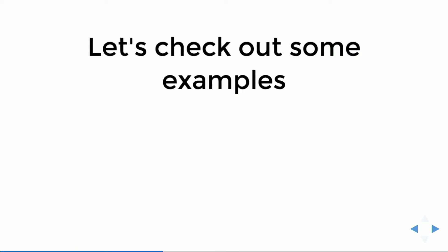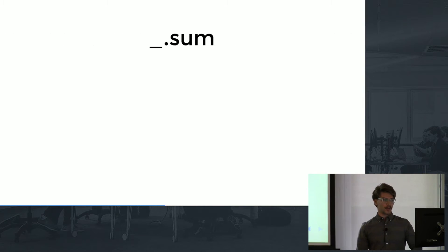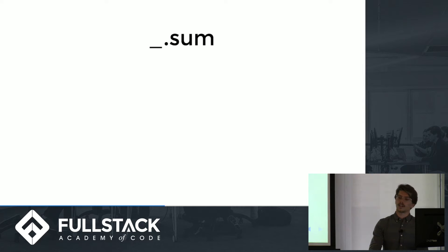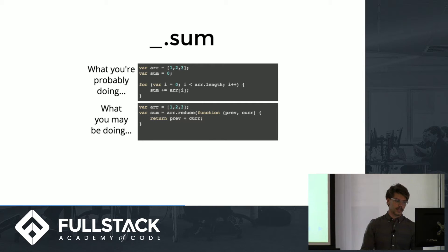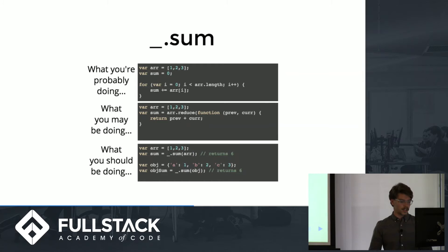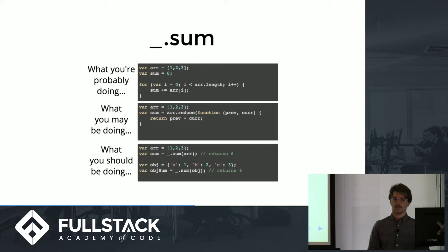Now I'm going to walk through some pretty simple examples and slowly ramp up to more difficult stuff. If anyone's used a language like Python, you can have an array and literally just write .sum and it returns the sum. In JavaScript you generally have to write more code — you might have an array, an incrementer, and sum it up. If you're more advanced, you might use the reduce function. But what you should be using with Lodash is just passing in the array and it returns the value. You can even use it on an object, which is really nice, whereas otherwise you'd have to iterate over every key using something like Object.keys, which is also not supported in a lot of browsers.